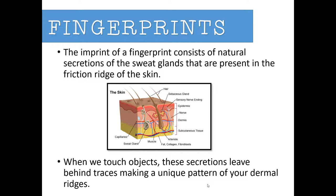The imprint of a fingerprint consists of natural secretions from the sweat glands present in the friction ridges of our skin. You can see in this diagram how those secretions move up through the pores of our skin, and then we mix that with dirt and oils and other things we might touch or pick up on our fingertips. When we touch objects, these secretions leave behind traces.